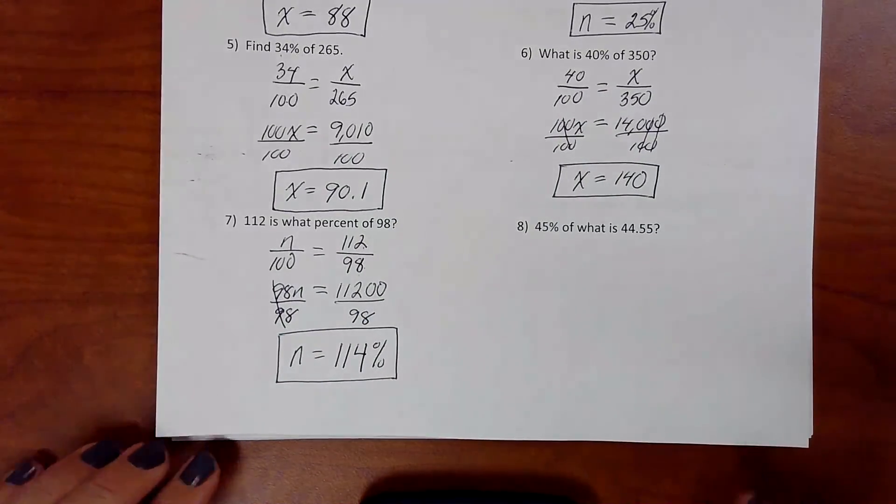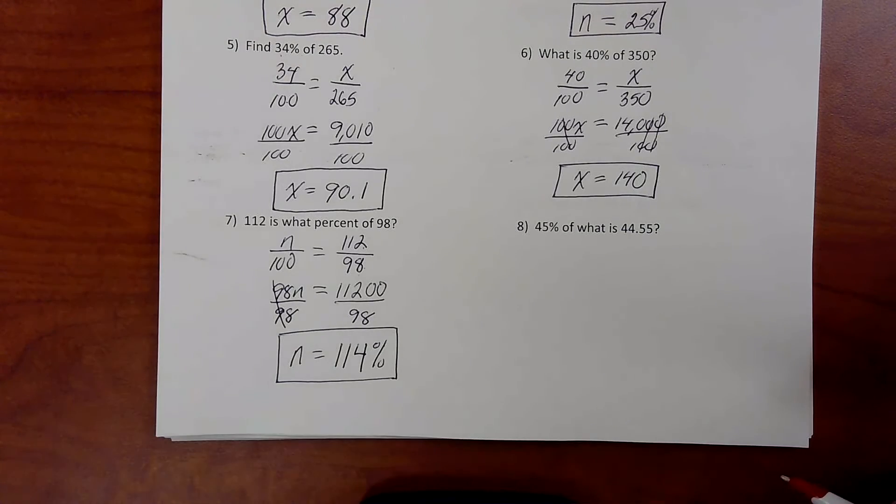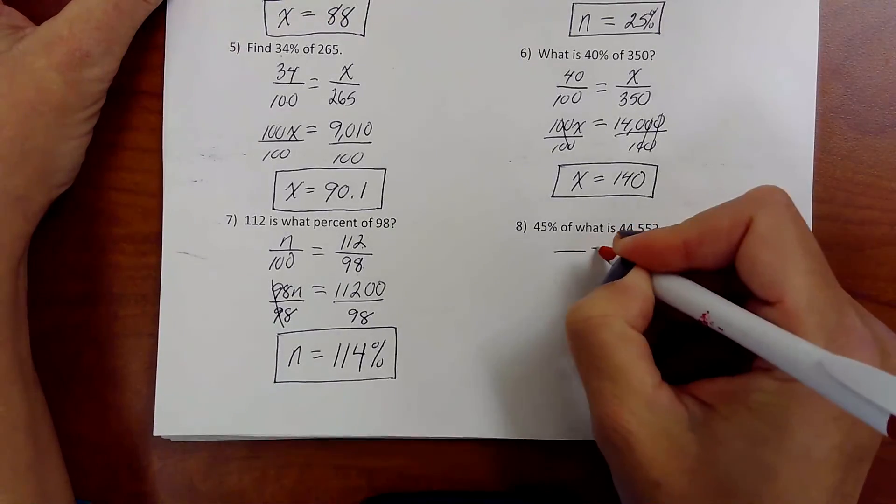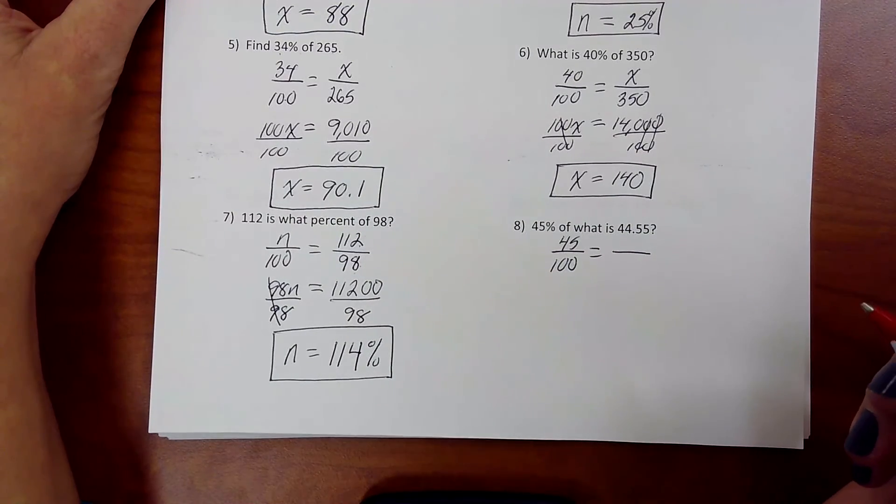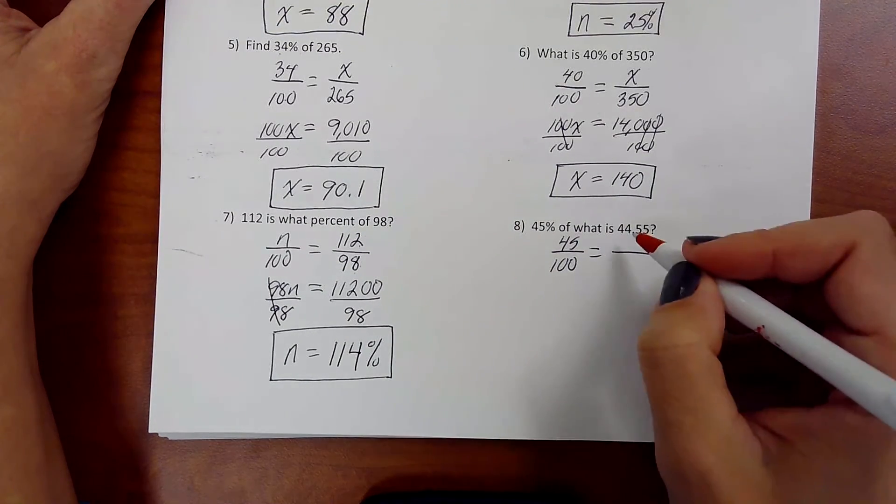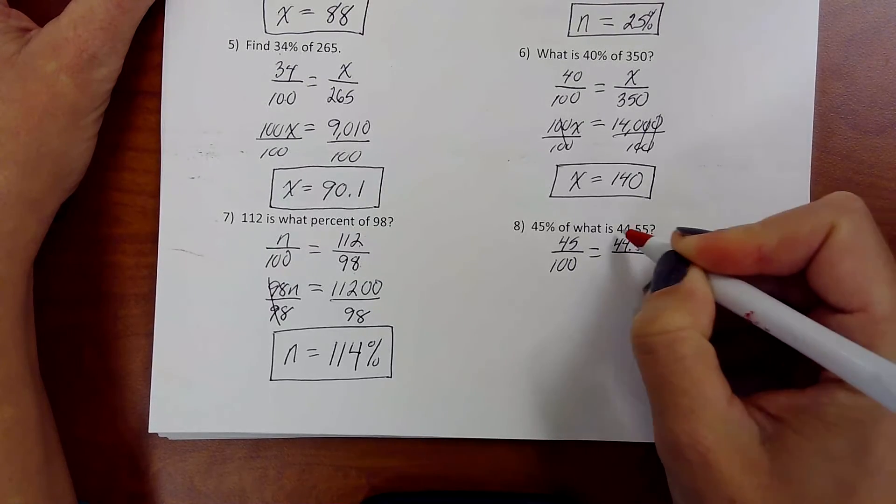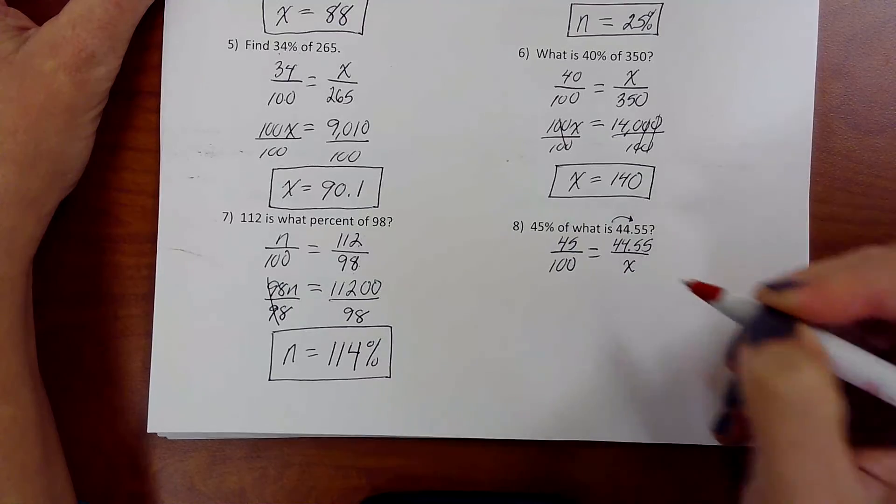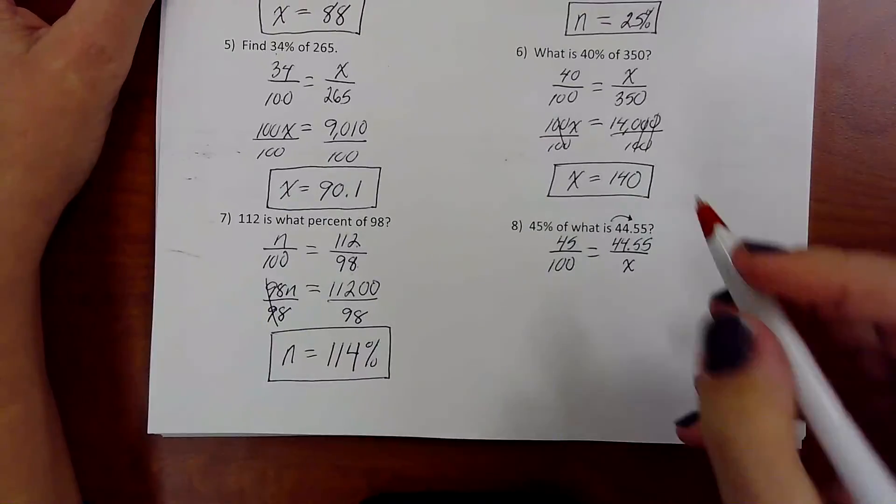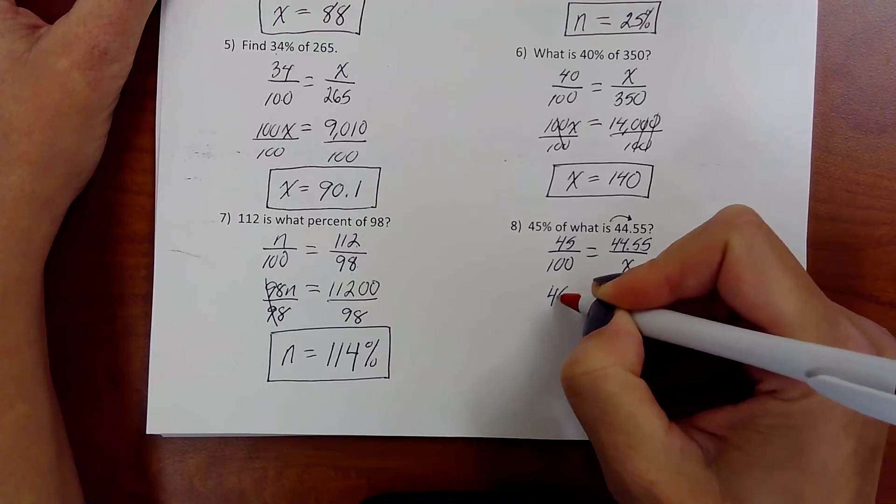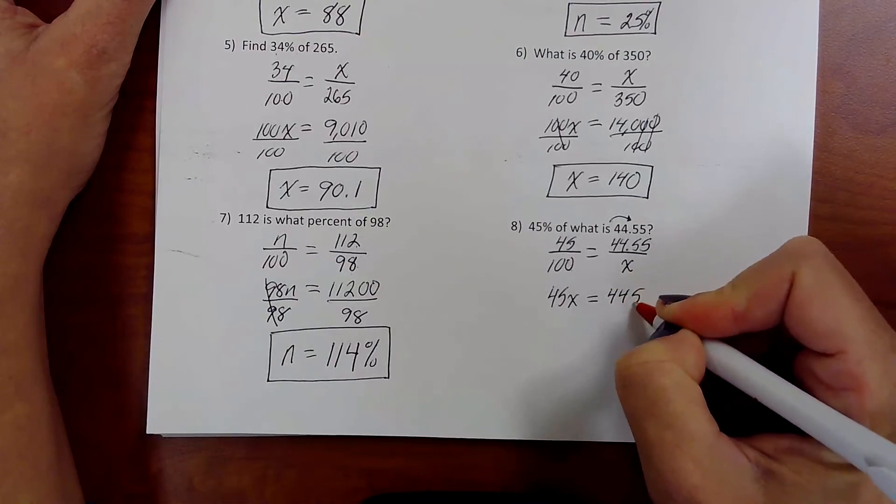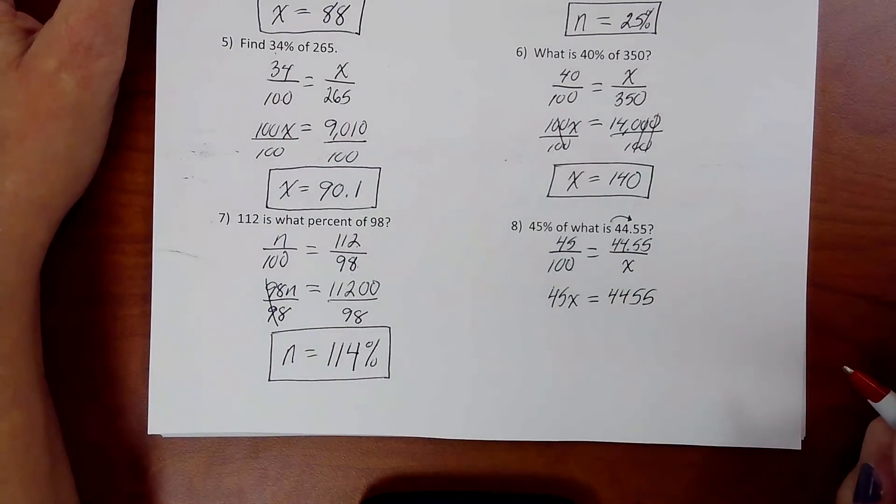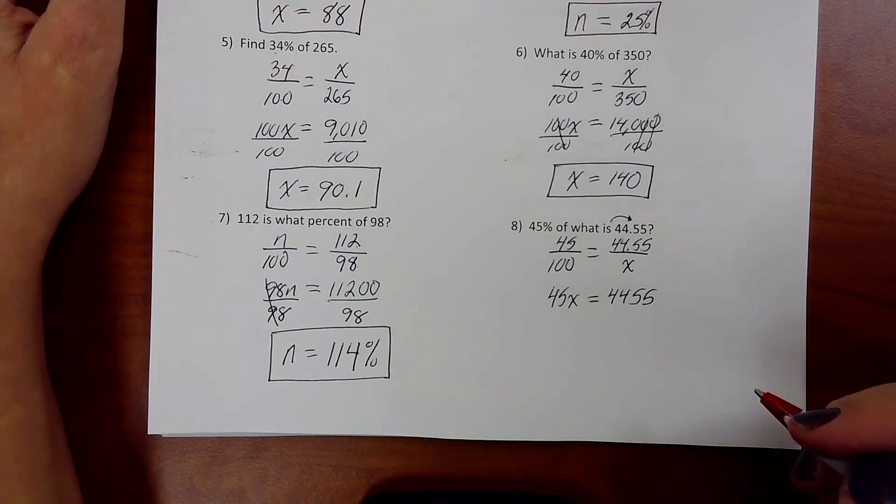Okay, one more. 45% of what is 44.55? Okay. 45% is 45 out of 100. Is over of. So, 44.55 is near is. Right? We don't know what's near the what. Let's cross multiply. 45 times x is 45x. 100 times 44.55. You would move the decimal over twice. So, there you go. Well, lots of 4's and 5's. How do you get x by itself?